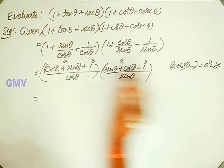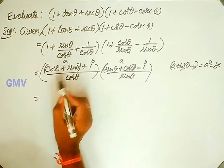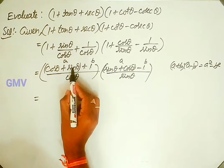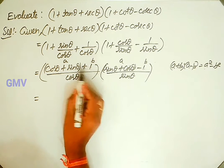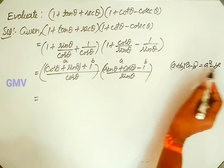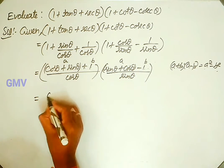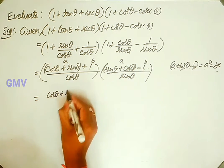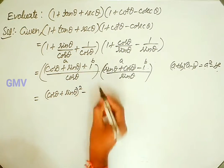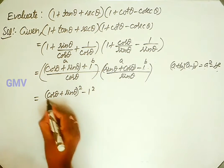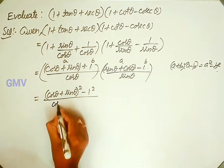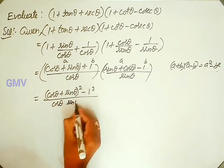Here the value of a is cos theta plus sin theta, and b value is 1. So we write a squared minus b squared: a squared means (cos theta plus sin theta) whole squared, minus b squared means 1 squared, all divided by cos theta into sin theta.